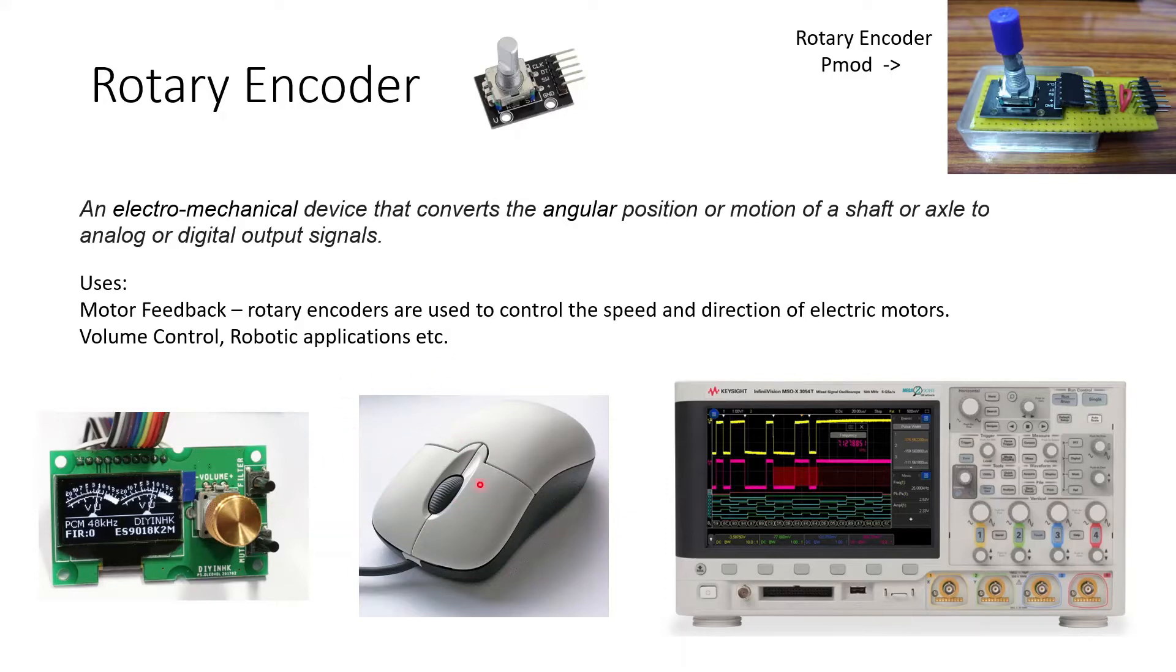The other famous device that we use is mouse. So in mouse also, the scroll is nothing but a rotary encoder. And also in oscilloscope, we have these knobs, right? These knobs which are used for adjusting the x and y positions, x and y axis data. Even in those places, we have rotary encoders. But these are mainly used in motor feedback, like feedback in CNC's and motors wherein we get the feedback of whether the motor is rotating or not and things like that in robotic applications.